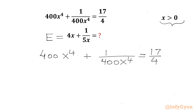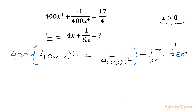Now let us multiply both sides by 400. We can cancel the denominator 4 by writing 100 over there, so the right hand side will become 1700.